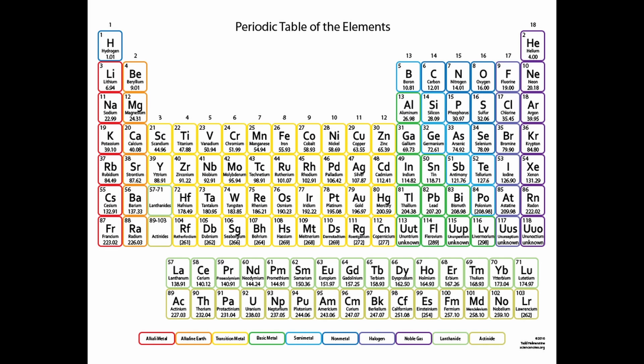So hydrogen has one electron in its valence shell, helium has two, and that valence shell could only take two, so it's full. Lithium has one, beryllium has two, boron has three, carbon has four, nitrogen five, oxygen six, fluorine seven, neon eight, and eight fills out that valence shell.